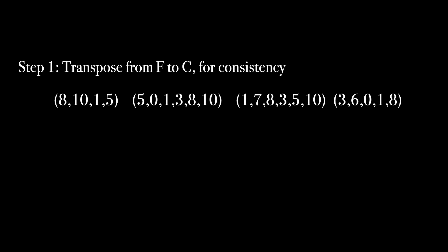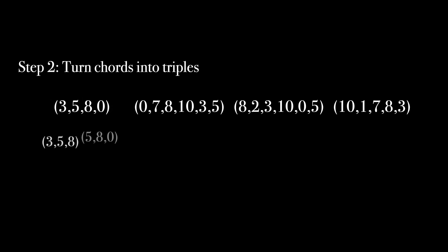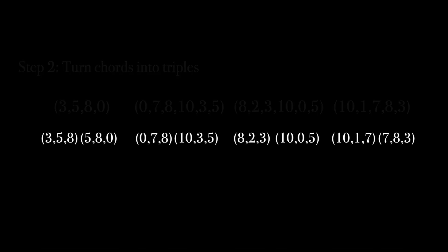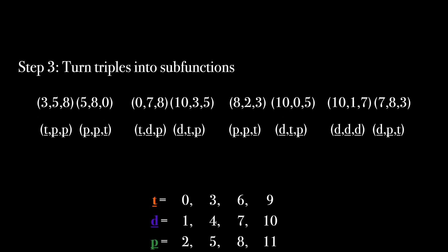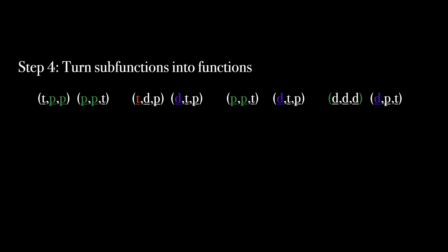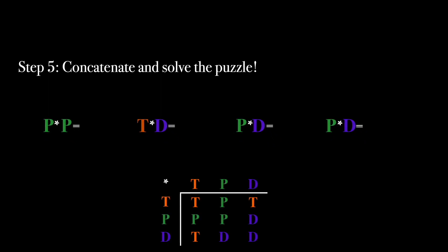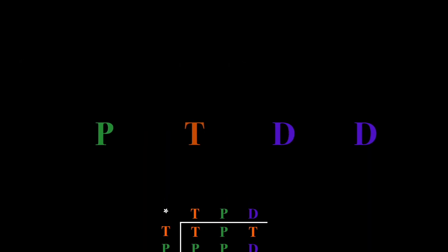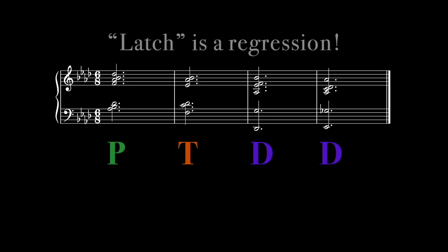Let's use this equation to determine the functions of Latch. First, we'll transpose the song from F minor to C minor. This makes zero a tonic for consistency. Next, we'll evenly break apart the chords into triples. Now we'll substitute the triples with subfunctions. From here, we can find the functions of the triples. Our final step is to concatenate into the original chords again and solve the puzzle. And that's it. We know how Latch works now.